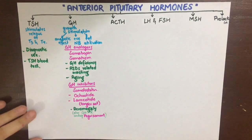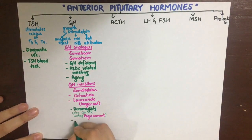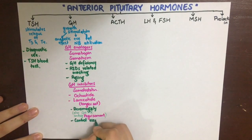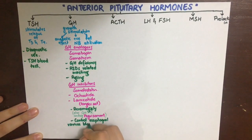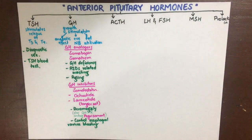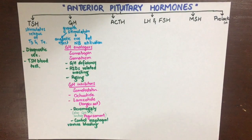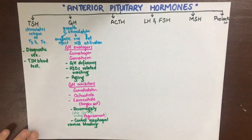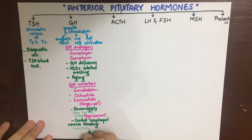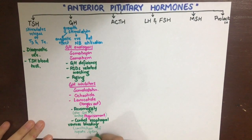Another syndrome in which growth hormone inhibitors can be used is the carcinoid syndrome, which is basically a GI tumor secreting serotonin, and octreotide can be used to inhibit that secretion. It can also be used to control bleeding from esophageal varices due to its constrictive property on the hepatic, splanchnic, and renal blood vessels.